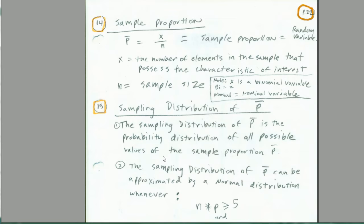Chapter 7, our last topic is sample proportion and the sampling distribution of p-bar. Sample proportion — we've already seen a lot of these. It's just p-bar: we're going to take x divided by n, where x is the number of elements in the sample that possess the characteristic of interest.